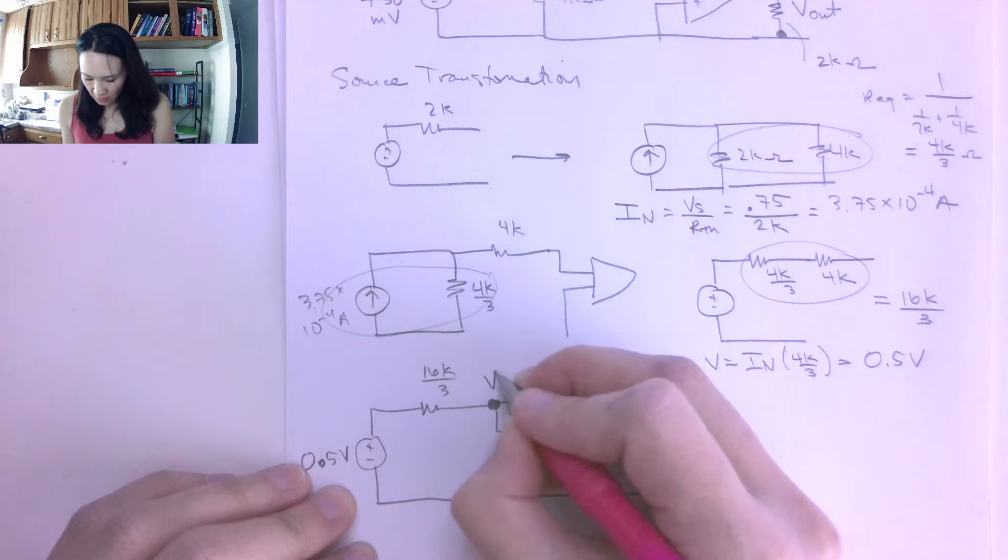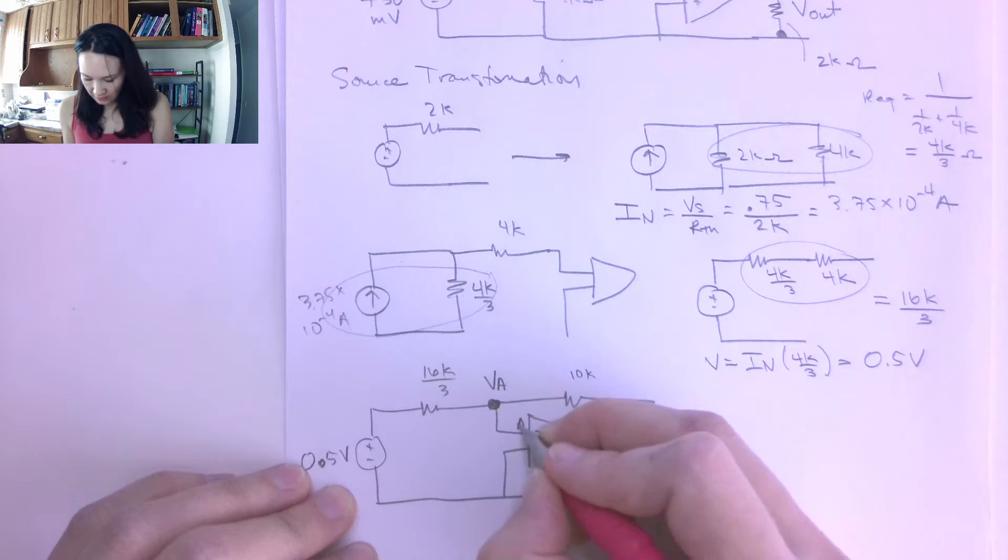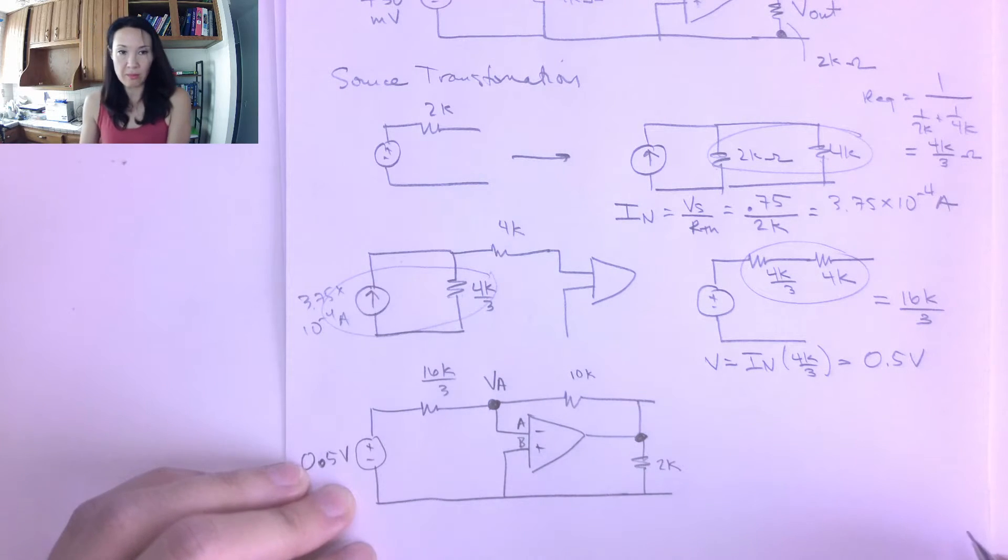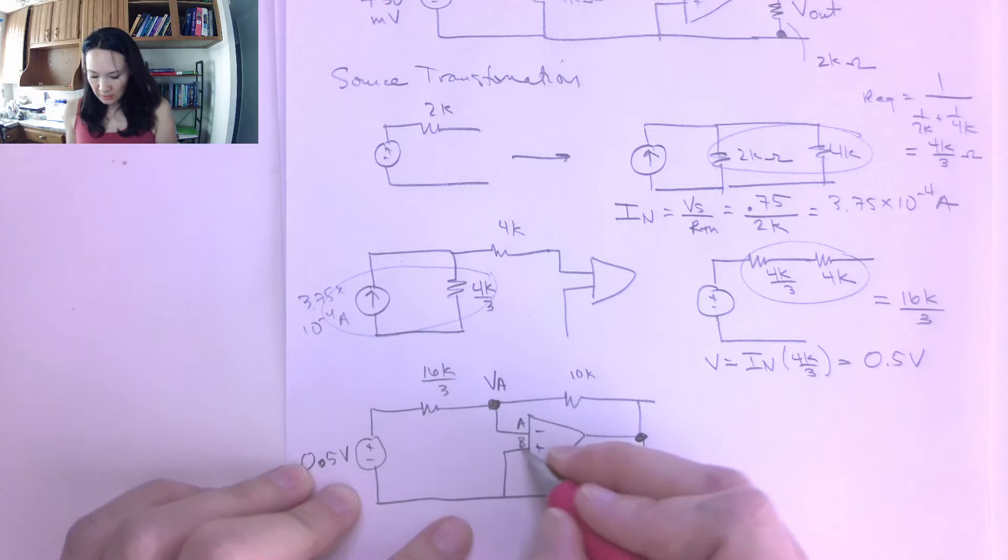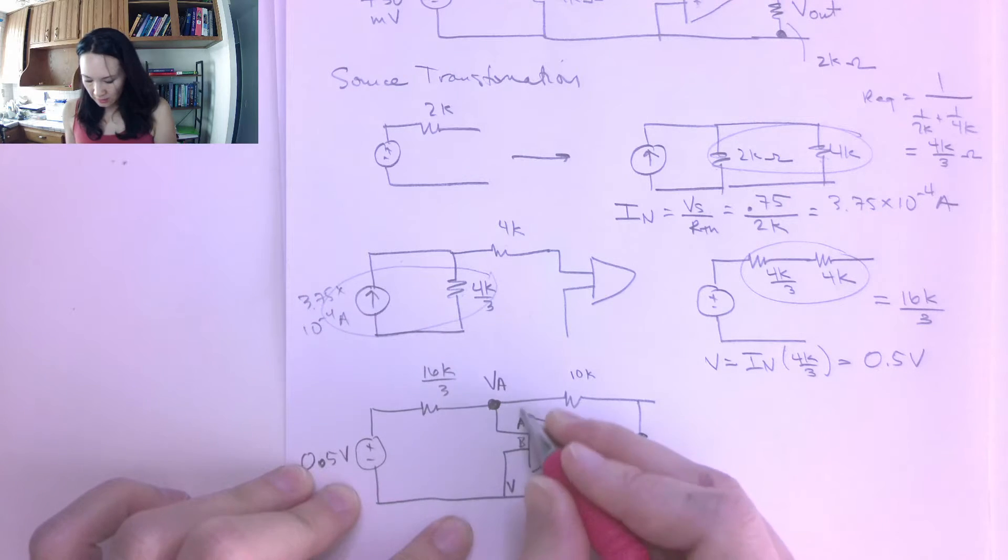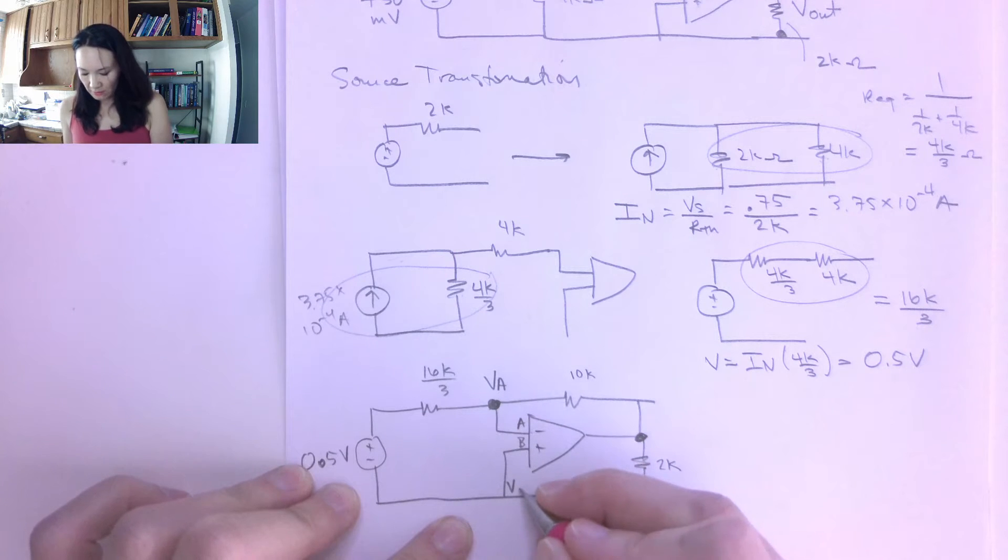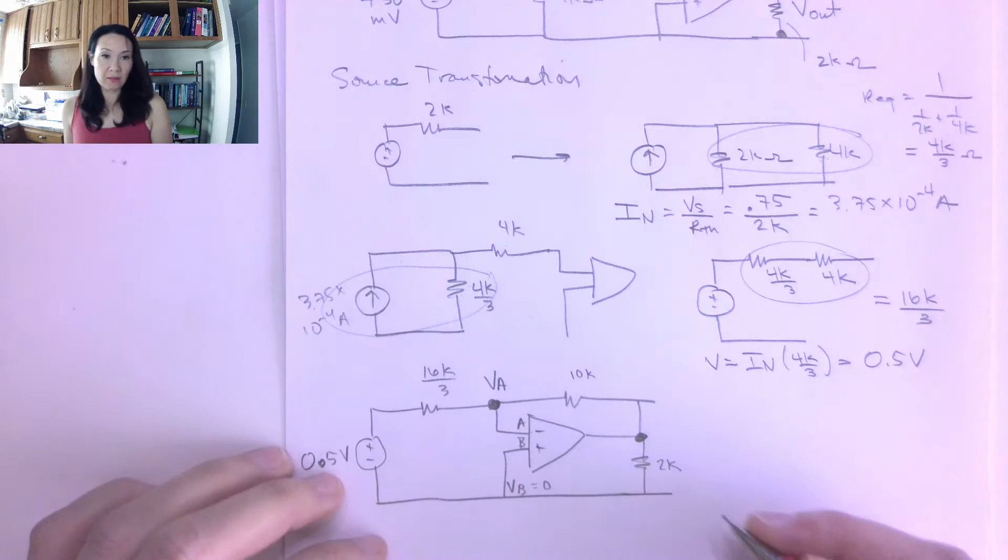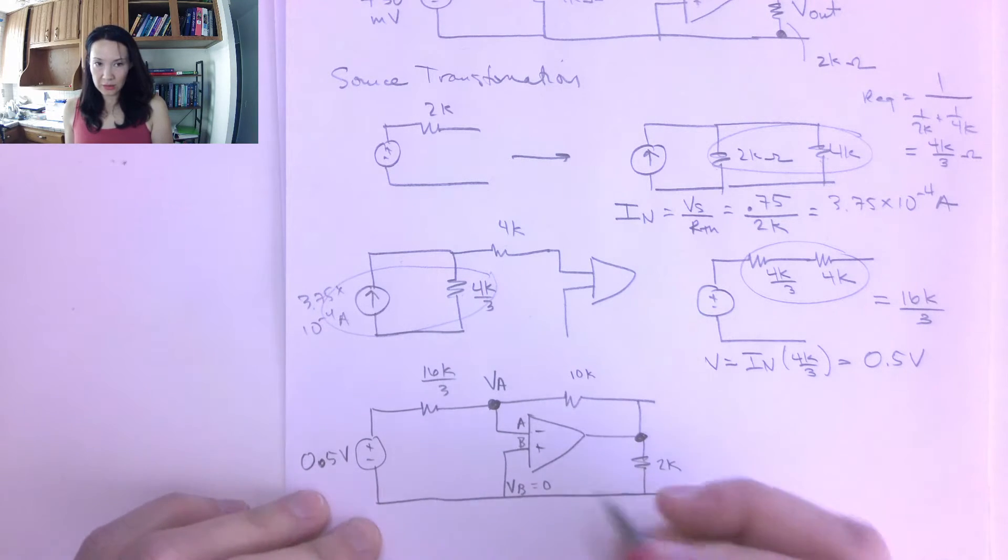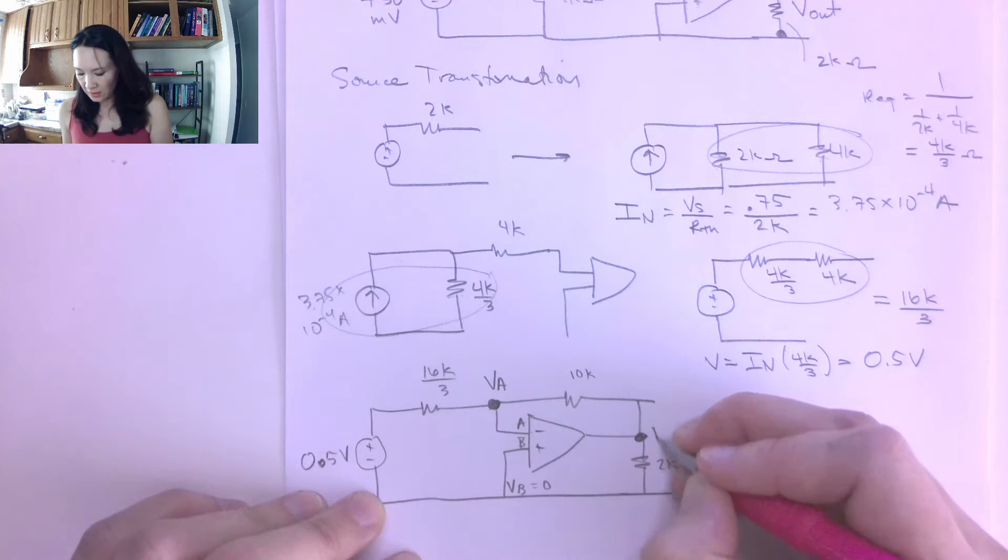I'm going to call this VA, because I like to call the top input my A input, and the bottom input of the op amp my B input. So my VA is the voltage drop at this location. My VB is connected directly to ground, so that's 0. I'm going to use my ideal op amp approximation, so this is going to help me in my nodal analysis. And the other node I have here, I'm going to label this as Vout.